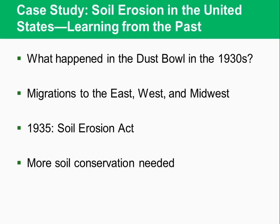More soil conservation is still needed. With the rise of ethanol demand, farmers are taking erodible land out of the conservation reserve to get government subsidies for planting corn to make ethanol for motor vehicle fuel.